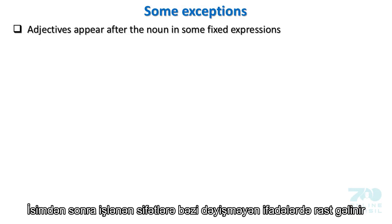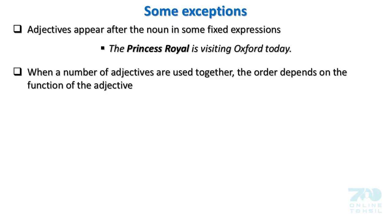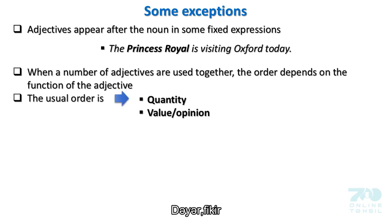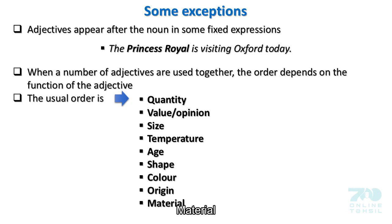Some exceptions: Adjectives appear after the noun in some fixed expressions. Example: The princess royal is visiting Oxford today. When a number of adjectives are used together, the order depends on the function of the adjective. The usual order is: quantity, value/opinion, size, temperature, age, shape, color, origin, material.